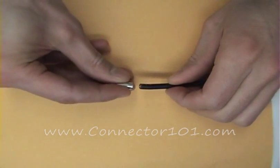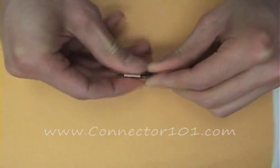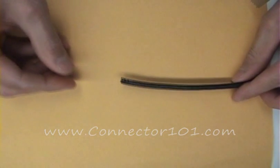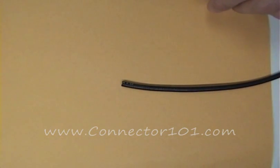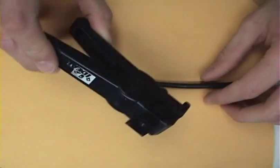Now the first thing to do is slide the crimp sleeve onto the cable. Next, the jacket, braid, and dielectric need to be stripped down to the following dimensions. To do this, I use the ideal cutting tool.